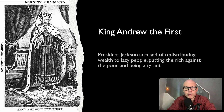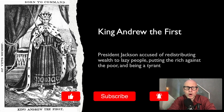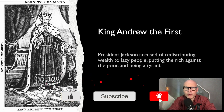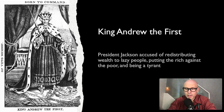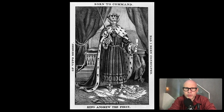Jackson was accused of redistributing wealth to lazy people, putting the rich against the poor, and being a tyrant. It was very common to call presidents a tyrant or a king back then — it was only about 50 years since the American Revolution, and having an all-powerful king was exactly what they had fought against. Looking at this political cartoon, we can analyze it in different ways. As a historian or history student, it's important to use these primary source documents to understand how people felt. The illustration shows Jackson as a king, with a veto document in his hand, stomping on the Constitution and internal improvements.